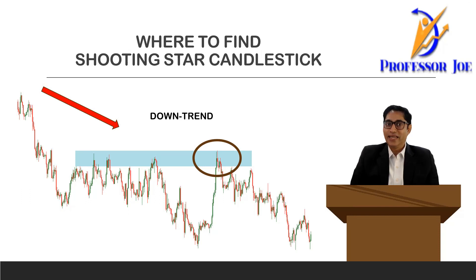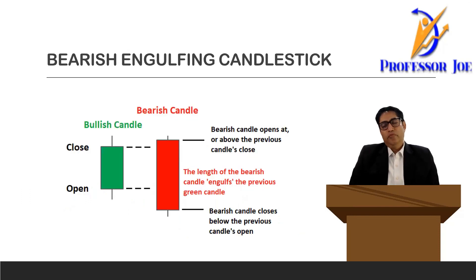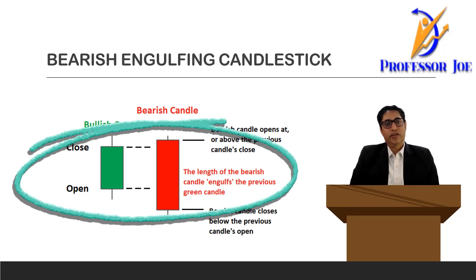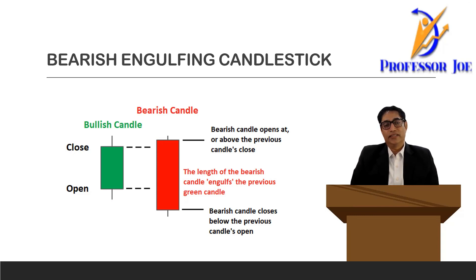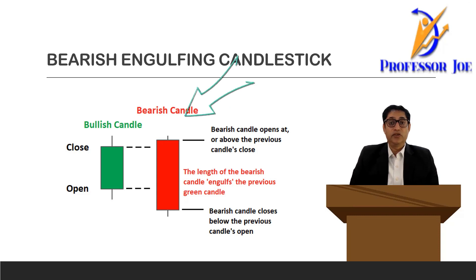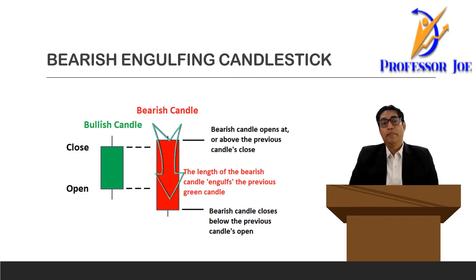The next important bearish candlestick pattern is the bearish engulfing pattern. When the market is in a downtrend there will be a retracement, and after the retracement, at a good resistance zone, if you see a bearish candle engulfing not only one but maybe two or three bullish candles, that is a strong bearish engulfing candle. A bearish engulfing candle will have a big body and a small tail — sometimes the tail can be long but it will be on the upper side of the body, meaning the candle is more towards the bearish side.